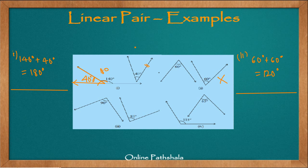In the third example, we have 90 degrees and 80 degrees — one right angle and one acute angle. Adding 90 degrees plus 80 degrees gives 170 degrees, which is not equal to 180 degrees. So when placing these two angles adjacent to each other, we will not get two opposite rays and will not form a 180-degree angle. Therefore, these angles do not form a linear pair.